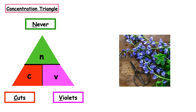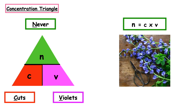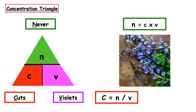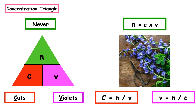We have to be able to manipulate this triangle to derive the equations. For number of moles, if we cover the N, we can see that C and V are next to each other, so we multiply: N = C × V. For concentration, covering C, we get concentration = number of moles divided by volume. For volume, covering V, we get V = number of moles divided by concentration.